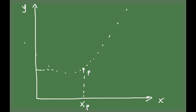You draw another perpendicular to the y-axis, and at the point where it intersects the y-axis, that is your y-coordinate, y sub P. You can do the same thing for all data points, and you can have a table where you write all your data with x, y, and t information for every point.